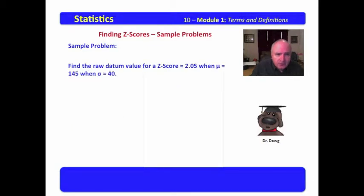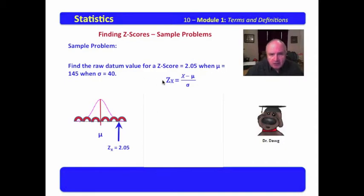We have one other unique problem that we're going to do. In this problem, we're not looking for a Z-score. We're looking for a raw datum, and it says find the raw datum value for a Z-score equal to 2.05 when mu equals 145 and sigma equals 40. Obviously, this is a population. Since we have mu and sigma, we would use this formula. We would plug in the values that we know. Now we know that our Z-score is way out here, 2.05 above the mean. We find that mu is 145. We would plug that in. The Z-score is 2.05, and sigma is 40.